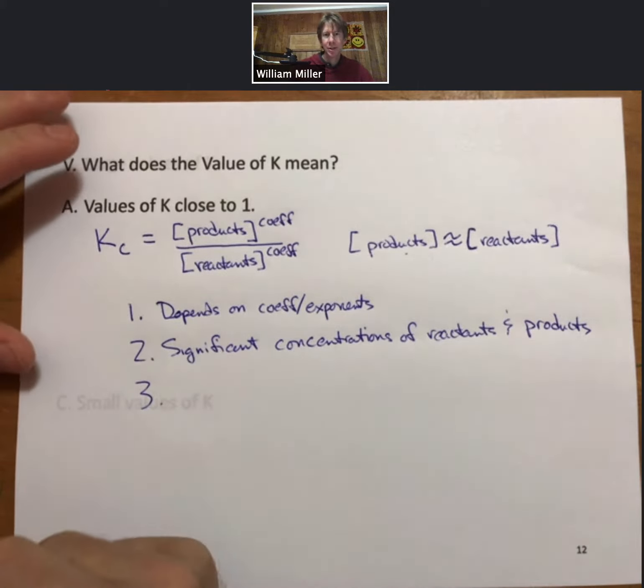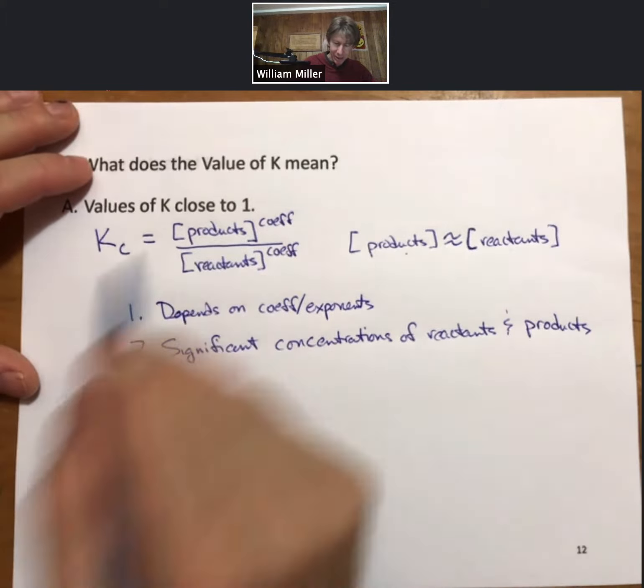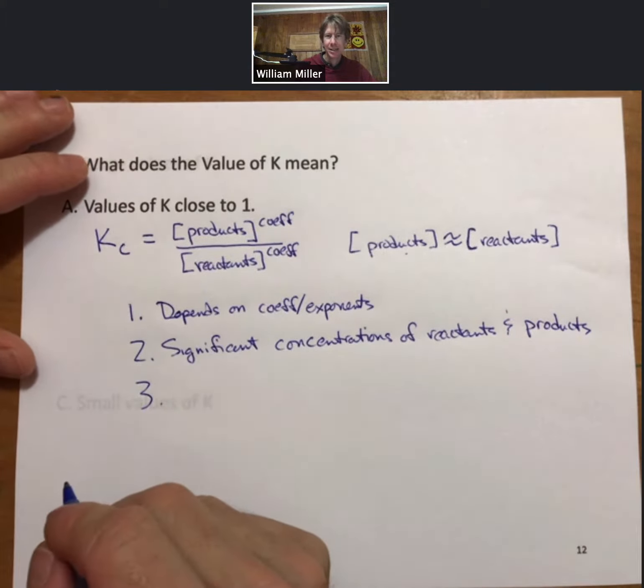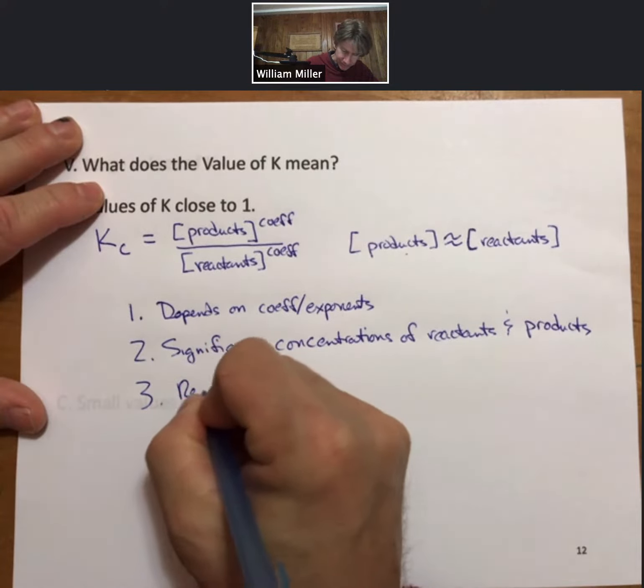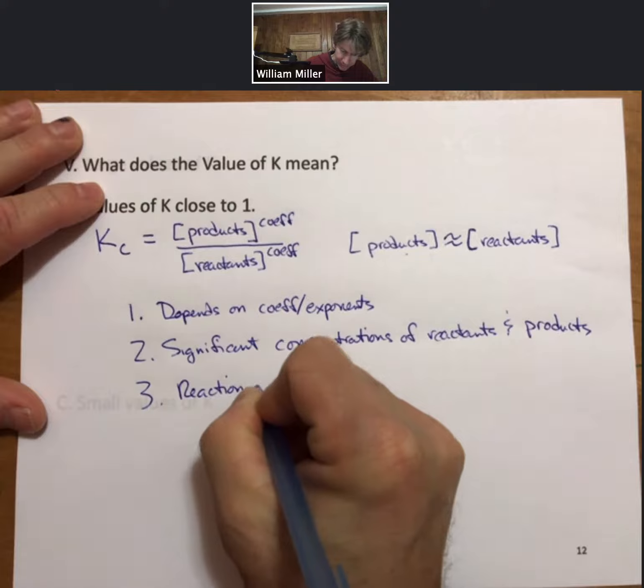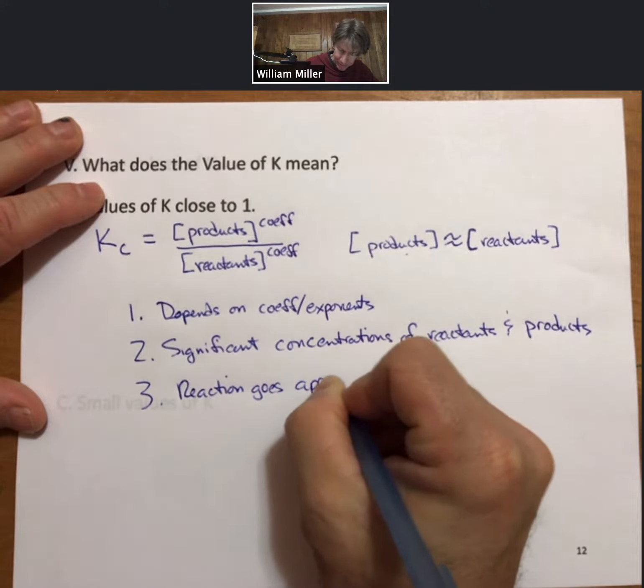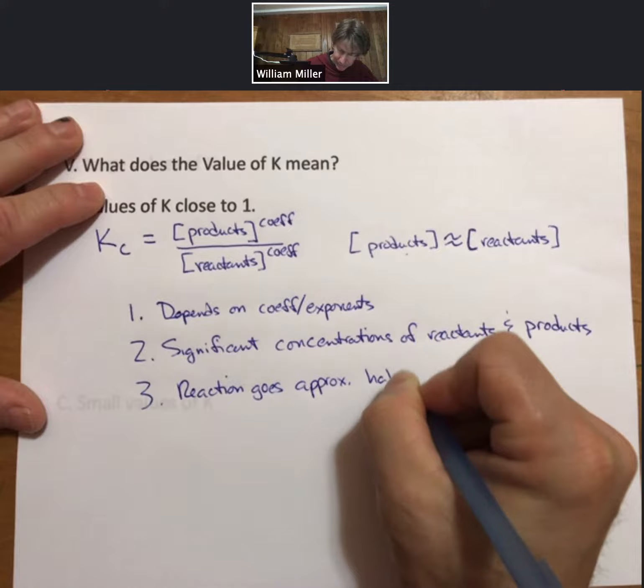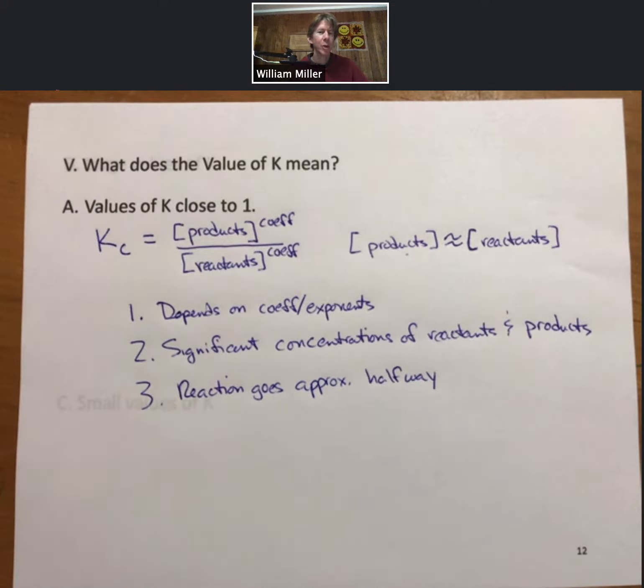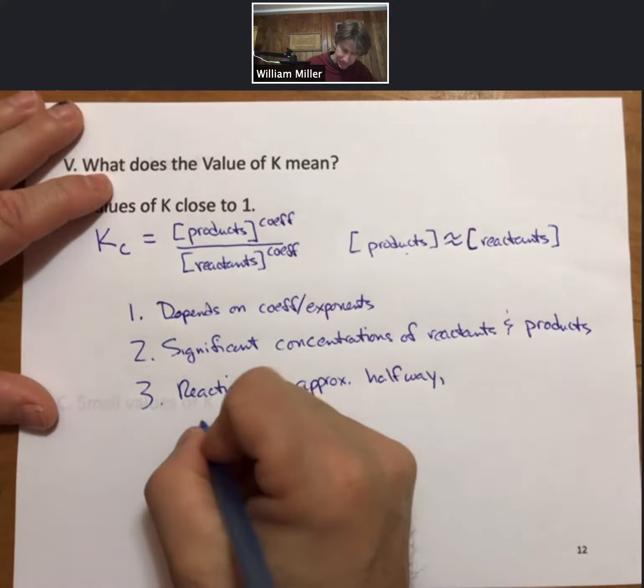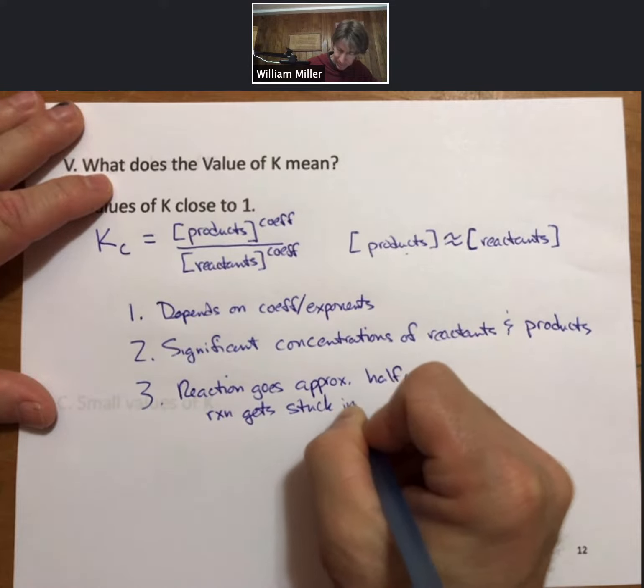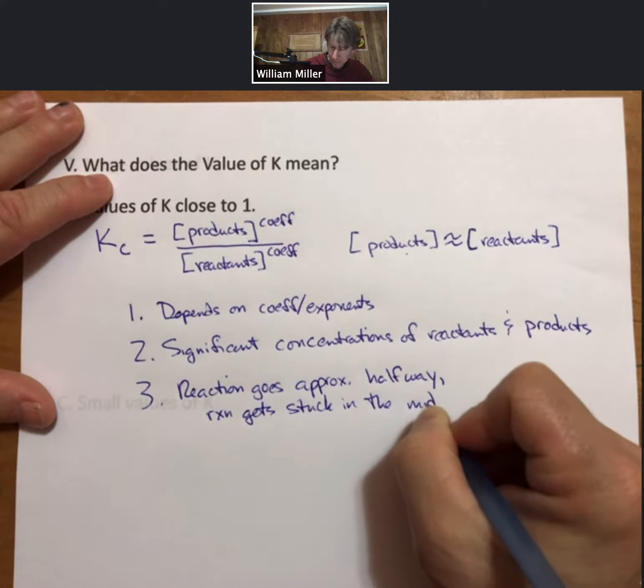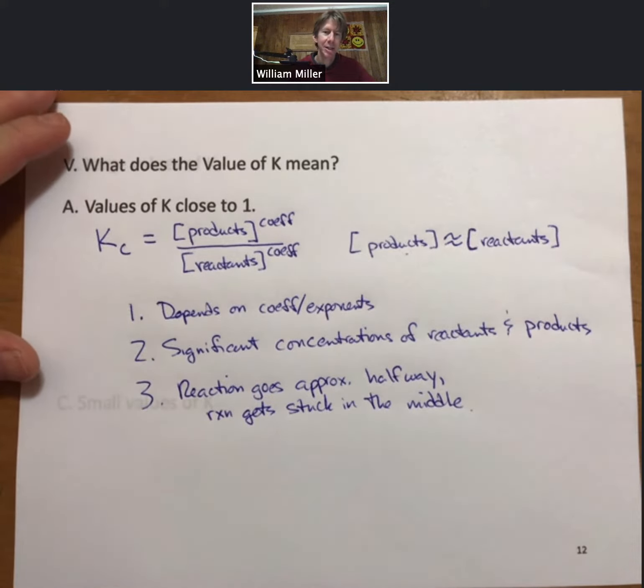Another term we'll use is that when K is close to one, the reaction goes approximately halfway. Another way of saying that is that the reaction gets stuck in the middle.